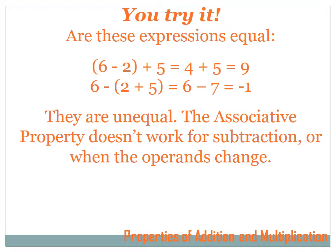Did you find these expressions to be equal? I hope not. 6 minus 2 in brackets changes to 4, then plus 5 gives us 4 plus 5, which equals 9. The second expression has 2 plus 5 in brackets, which becomes 7, so we get 6 minus 7, which equals minus 1 — which certainly doesn't equal 9. So they are not equal; the associative property does not work for subtraction or when the operands change.